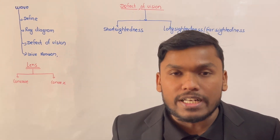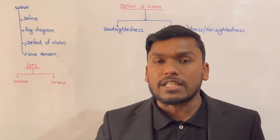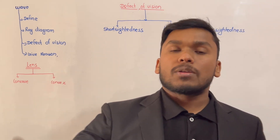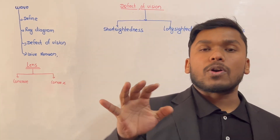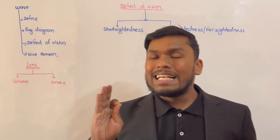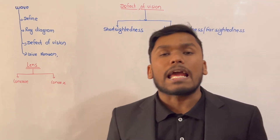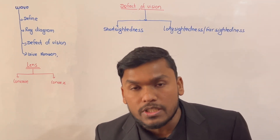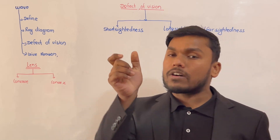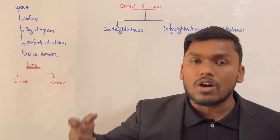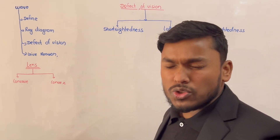It's a defect of vision. In the defect of vision, you can apply basic knowledge about the lens. We talk about the lens — which type? The lens has two types: the concave lens and the convex lens.